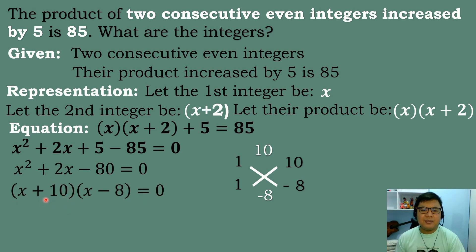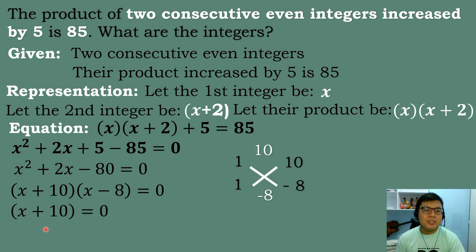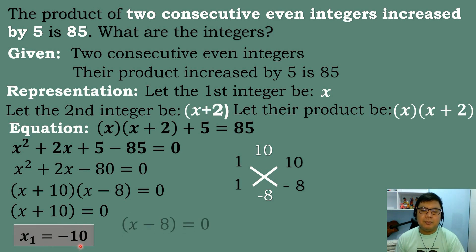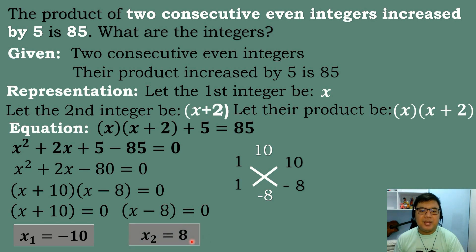The factors are (x + 10)(x − 8) = 0. Using the zero product property: x plus 10 equals 0 gives x equals negative 10 (first root). And x minus 8 equals 0 gives x equals positive 8 (second root).